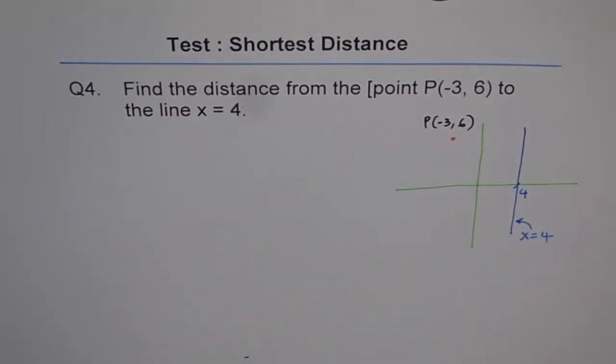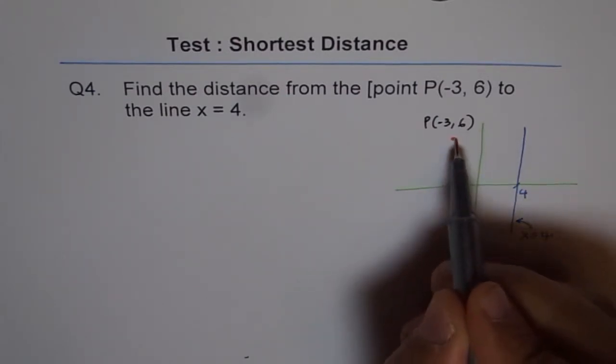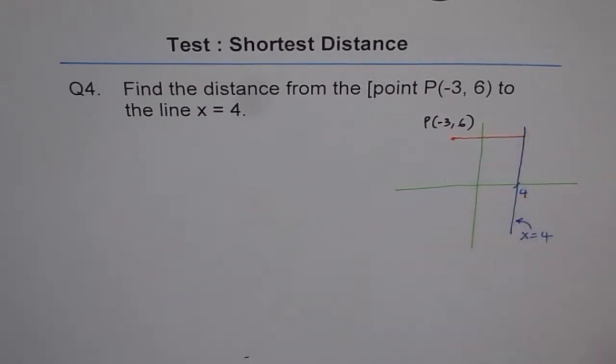Now what is the shortest distance between the given point and the line? It should be the perpendicular distance, right? So that is the shortest distance.